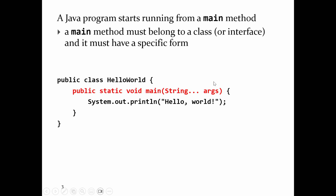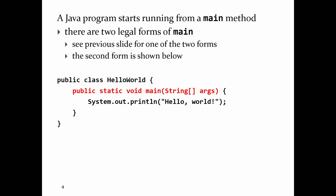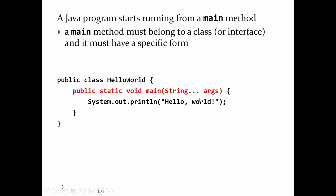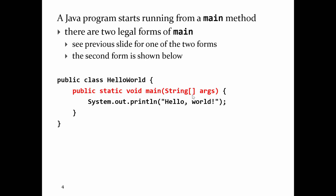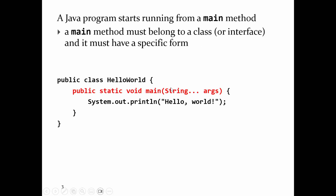The main method can have more than one form — it's allowed to have two. The other way to write it uses square brackets instead of dot dot dot. They are both legal and both mean exactly the same thing. Both forms of the main method are saying that main can be called by passing in zero or more string arguments. Normally when you run a program, you don't call main yourself.